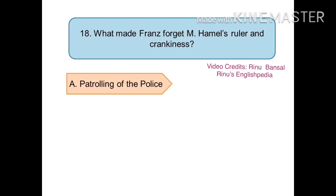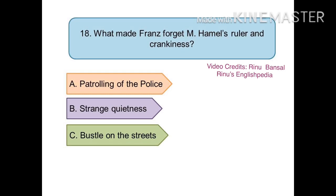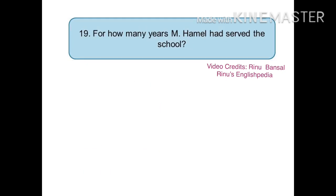The eighteenth question is: what made Franz forget Monsieur Hamel's ruler and crankiness? The options are (a) patrolling of the police, (b) a strange quietness, (c) the bustle on the streets, or (d) the idea of Monsieur Hamel's leaving. The correct answer is (d) the idea of Monsieur Hamel's leaving made Franz forget all about the strictness of Monsieur Hamel.